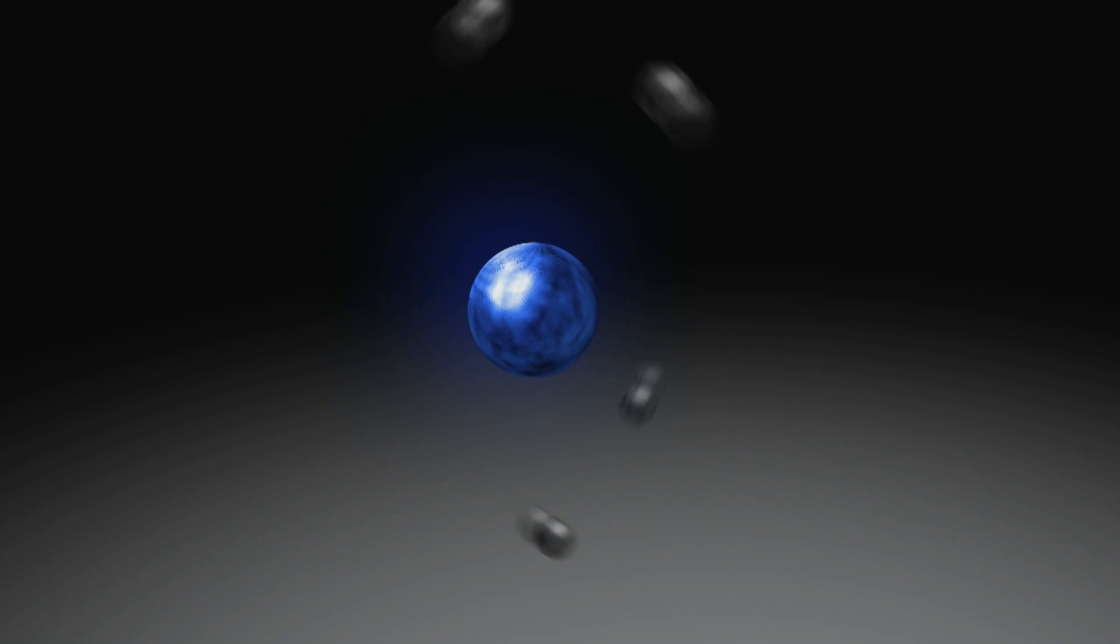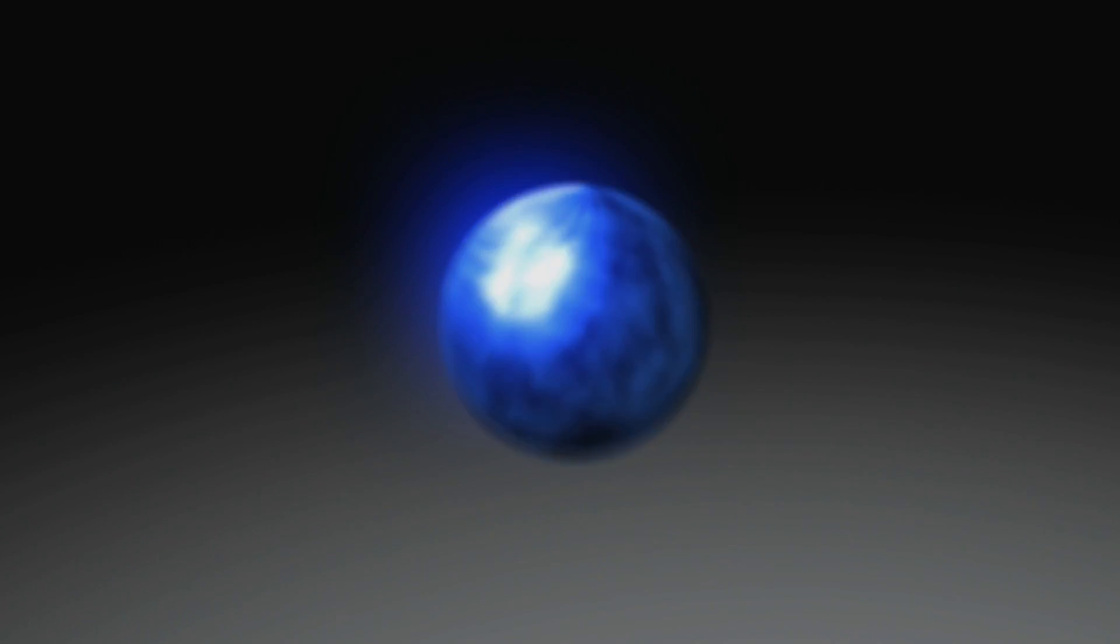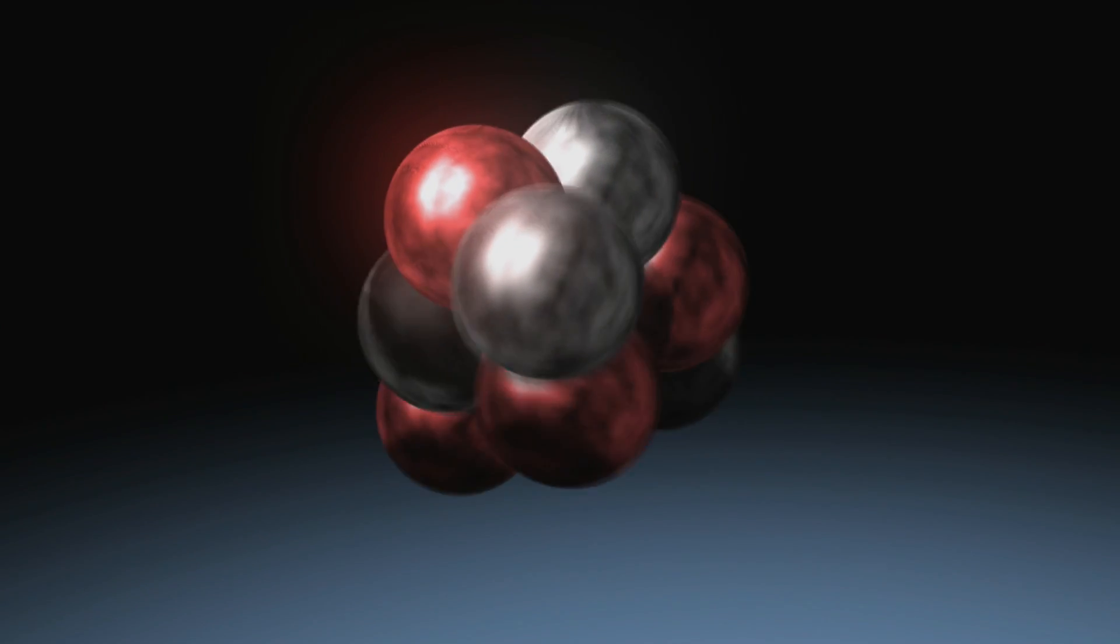What's the atom made of? It's made of a nucleus and electron. What's the nucleus made of? It's made of a proton and a neutron. What are the proton and neutrons made of? They're made of quarks. What's the quark made of? We don't know.